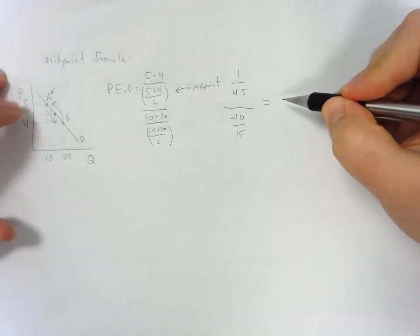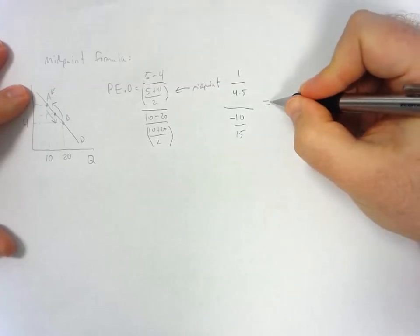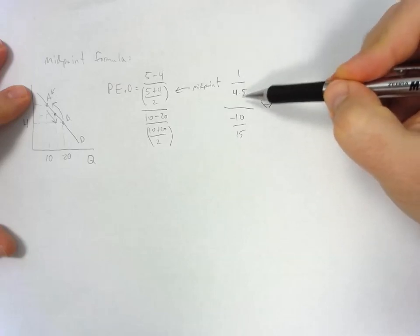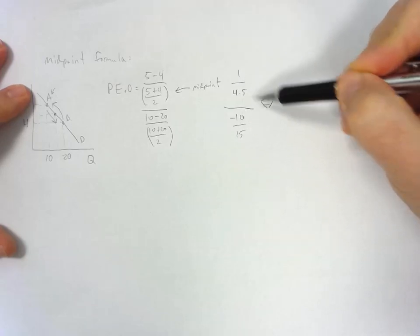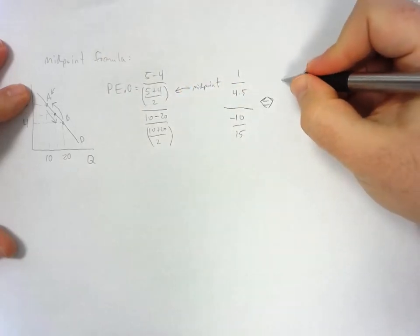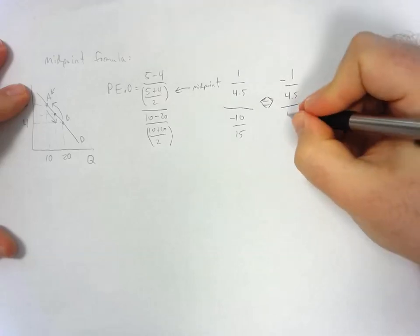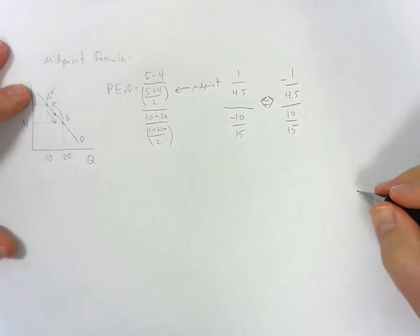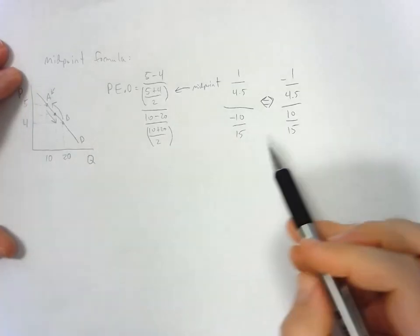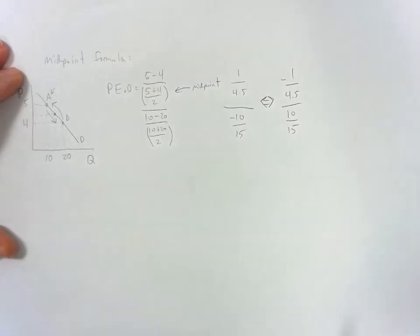Whether we move from A to B or B to A, the negative ends up either in the numerator or the denominator. Moving from B to A we get −1 / 4.5 divided by 10 / 15. So by using the midpoint formula, the elasticity value is the same regardless of direction.